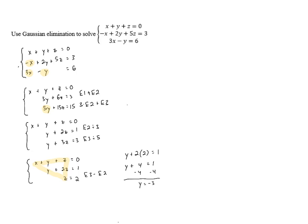And now that we know what z and y are, we can substitute them into the first equation to figure out what x is. x plus y, which is negative 3, plus z, which is 2, equals 0. Negative 3 plus 2 is negative 1, so this becomes x minus 1 equals 0. And if we add 1 to both sides, that gives us x equals 1.